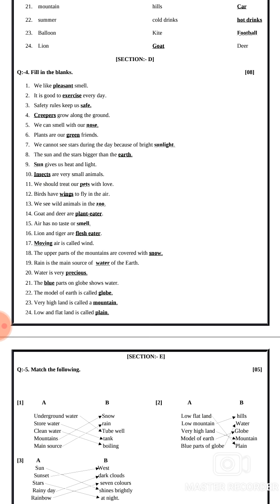Thirteen number: we see wild animals in the zoo. Hamein wild animals zoo mein dekhne ko milta hai. Fourteen number: goat and deer are plant eater. Answer is plant eater. Fifteen number: air has no taste or smell. Air ka taste bhi nahi hota aur smell bhi nahi hoti. Answer is smell.